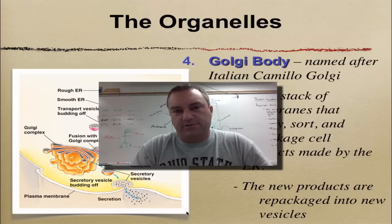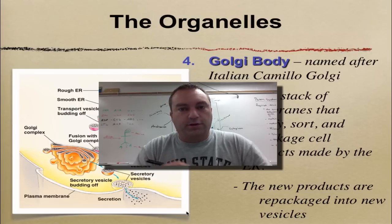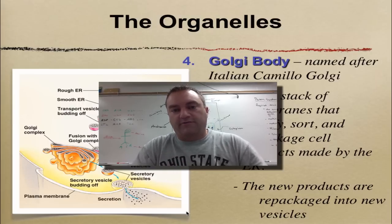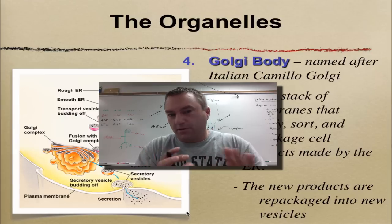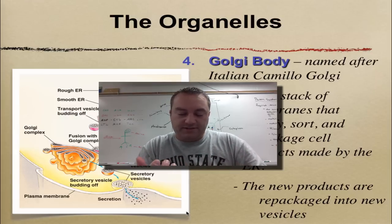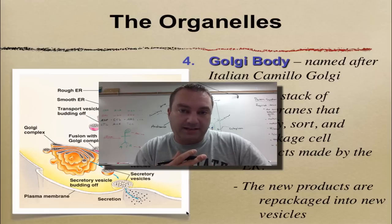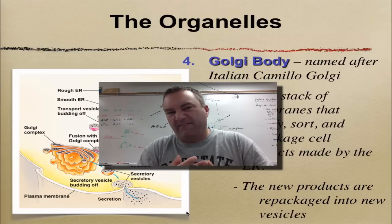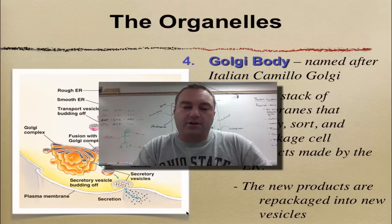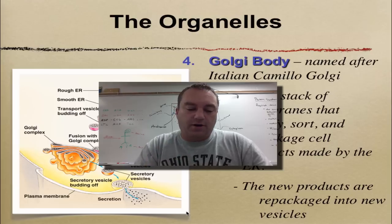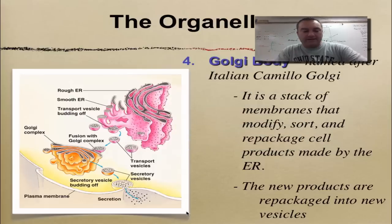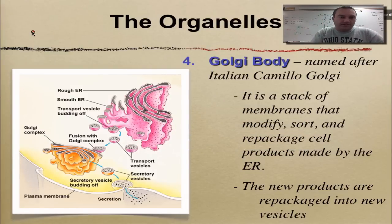Welcome to episode 6 from chapter 7. In this episode we're going to focus on three organelles that are all related to each other: the Golgi, one of the things that the Golgi makes which is a lysosome, and then vacuoles. The Golgi is part of what we learned about in our last episode — the endomembrane system.